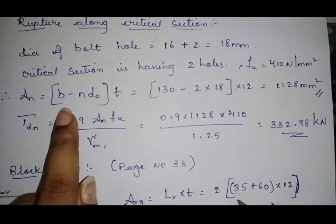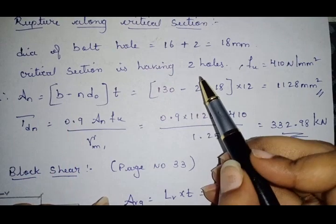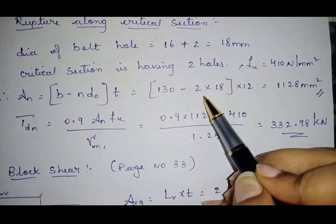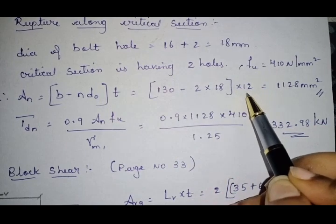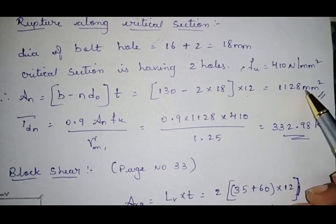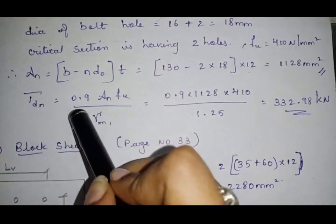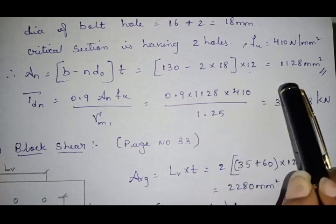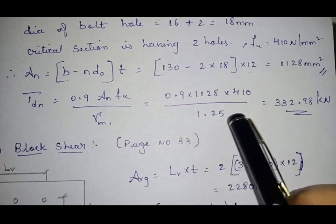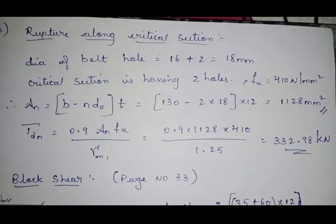Substituting: An = (130 − 2 × 18) × 12 = 1128 mm². Then Tdn = 0.9 × 1128 × 410 / 1.25 = 332.98 kN. This is the strength of the plate for rupture.